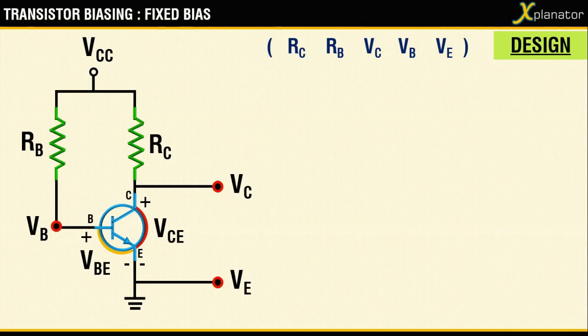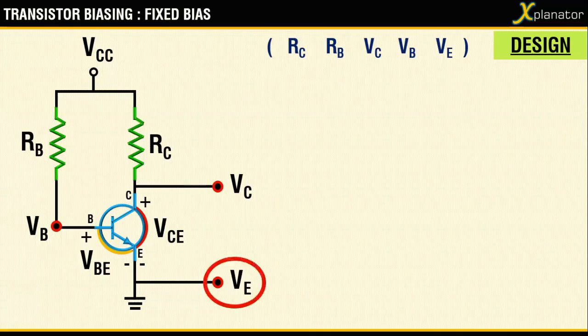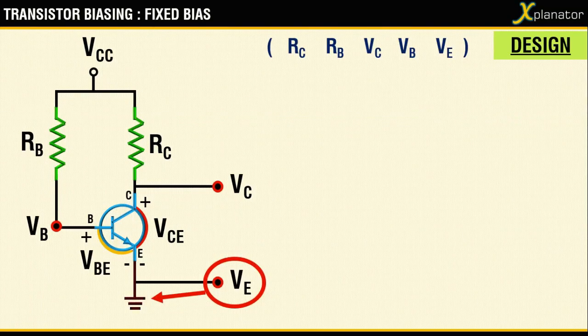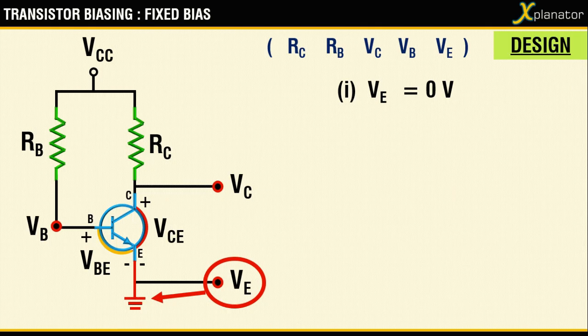I list them down on the top row, and we begin with the last term, that is VE. You can see that VE is connected to the ground, so the value for that is going to be zero, and that is our first value for the unknown.